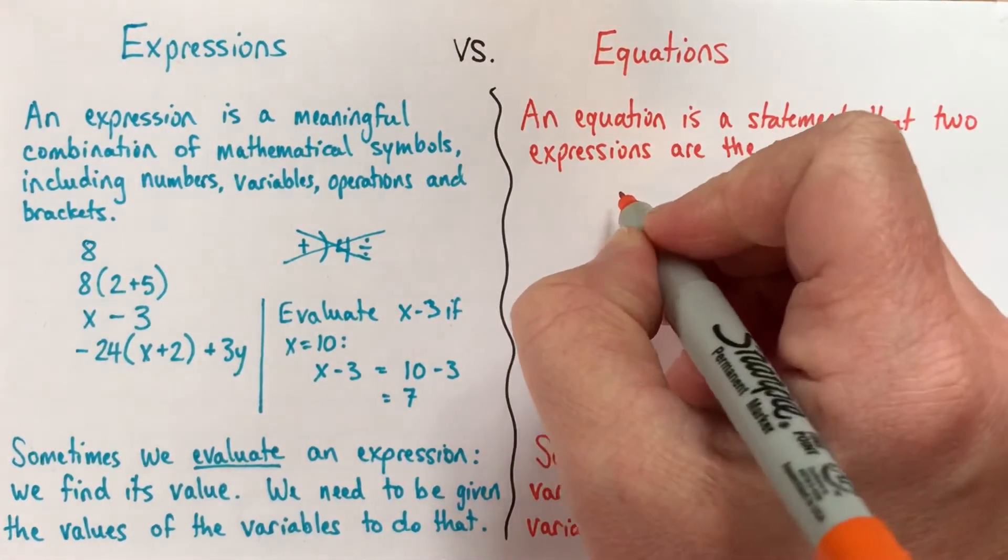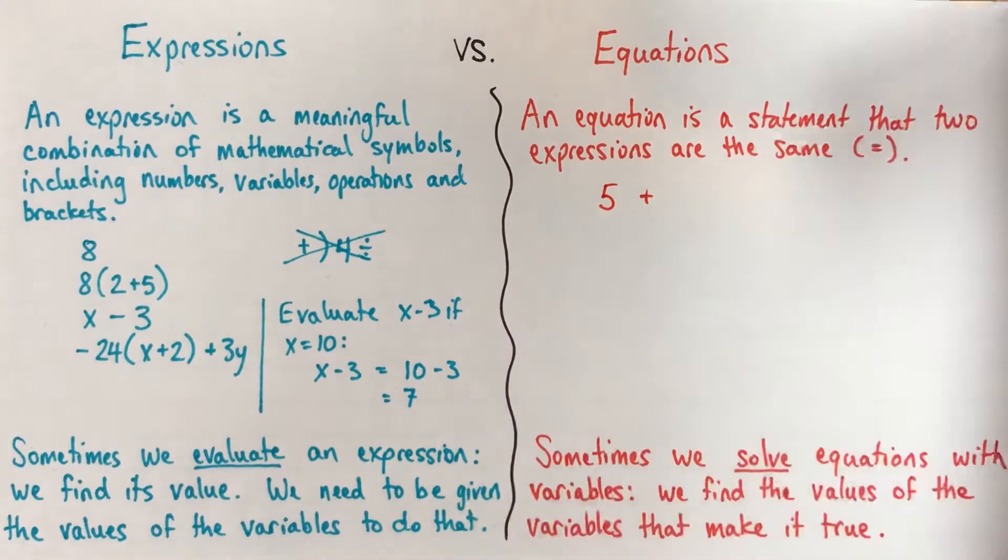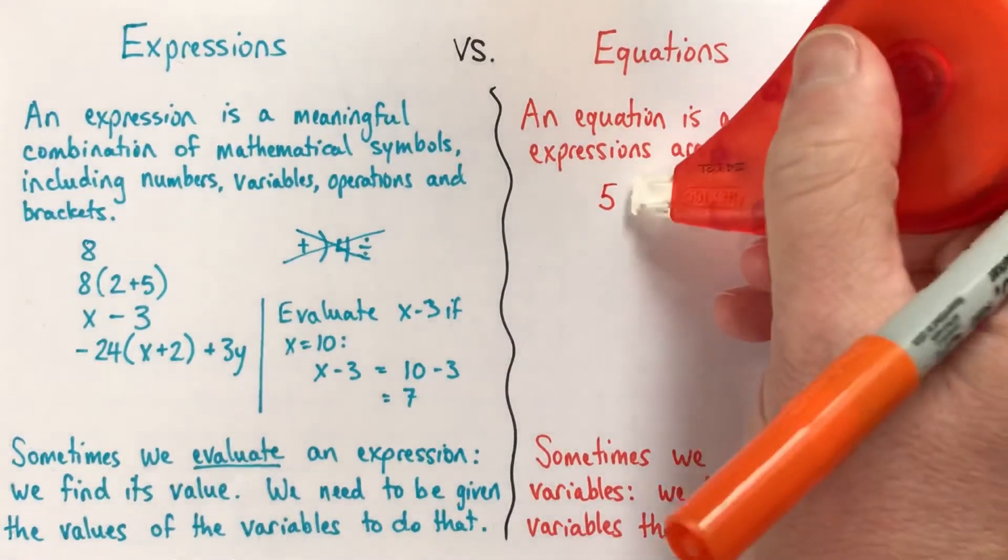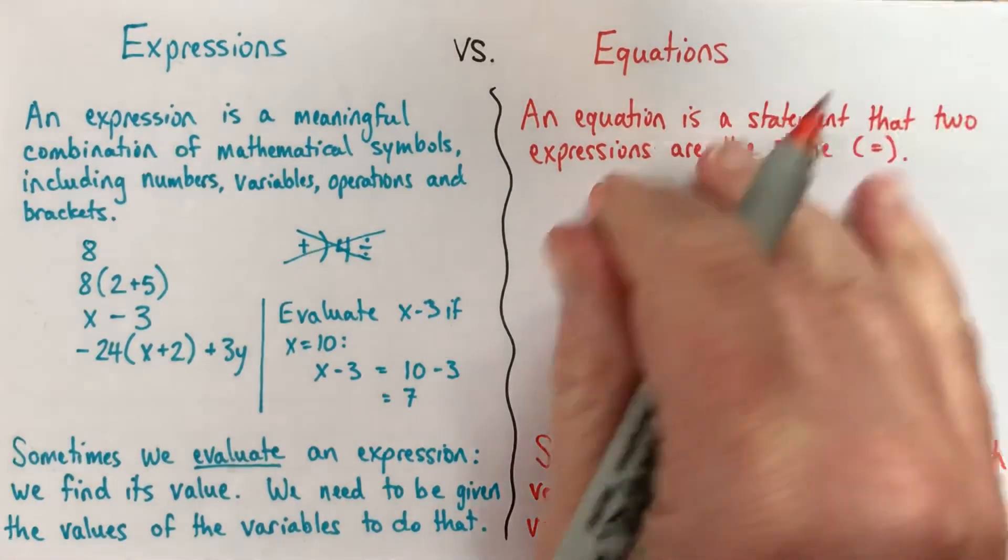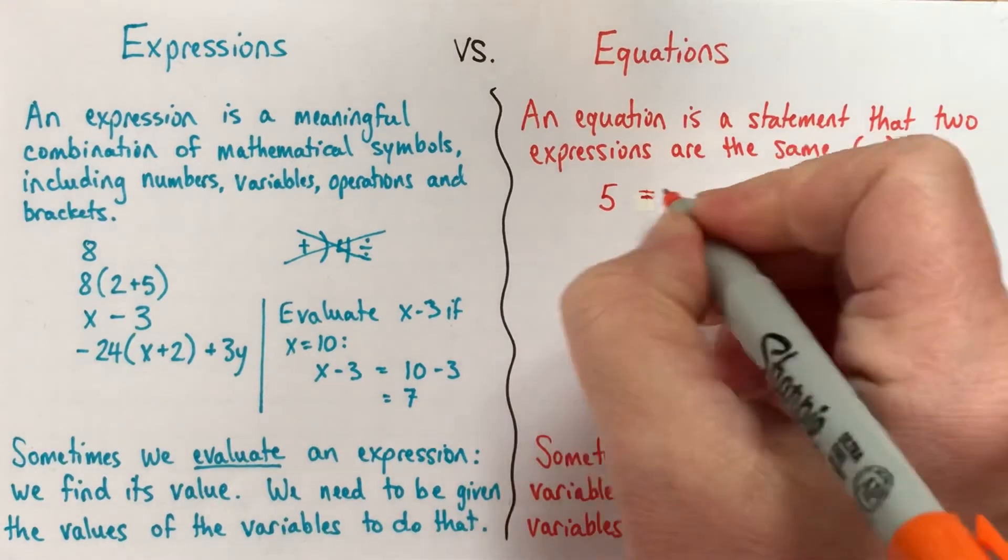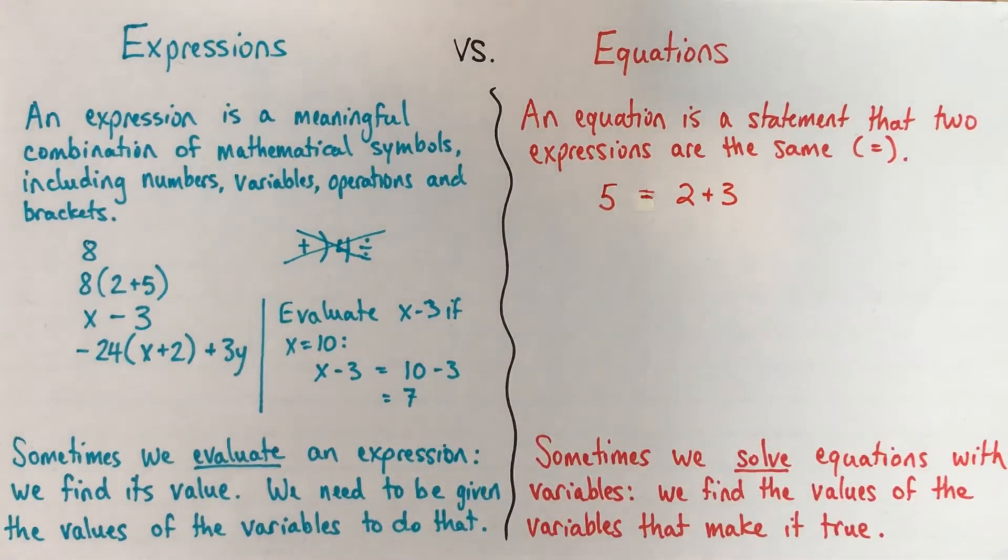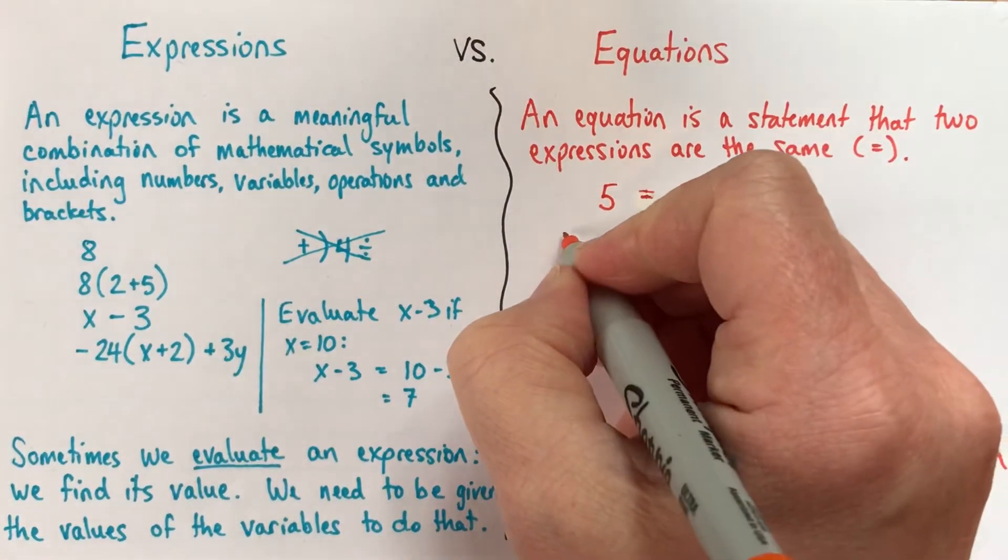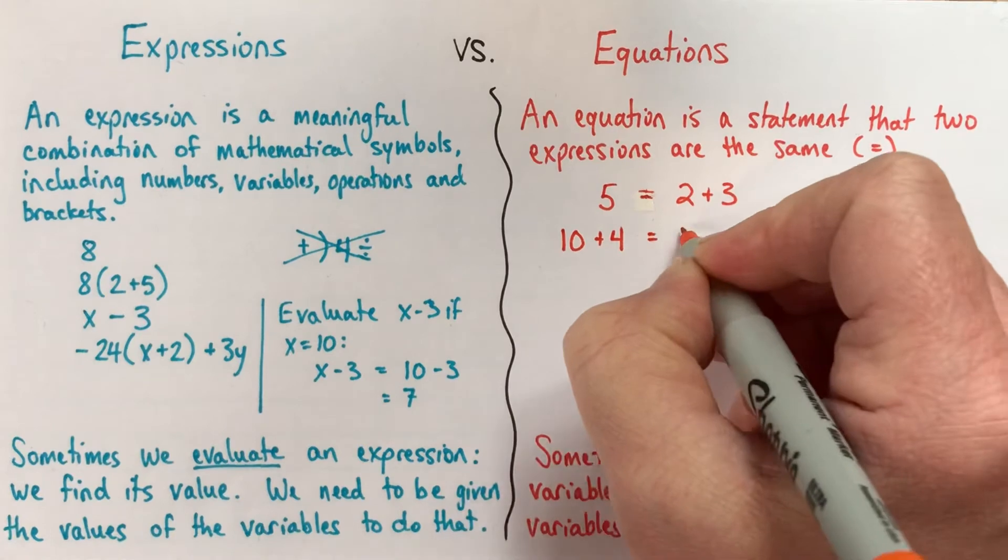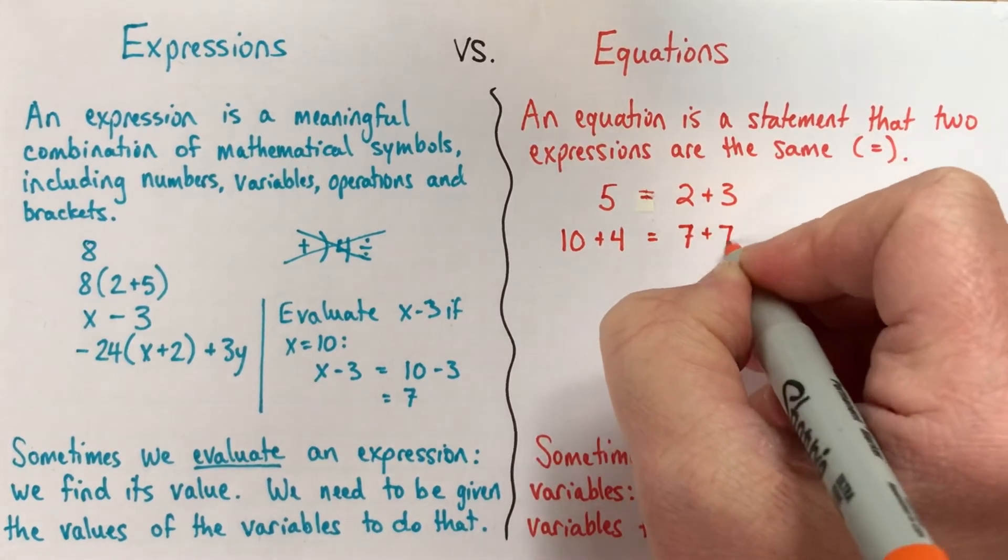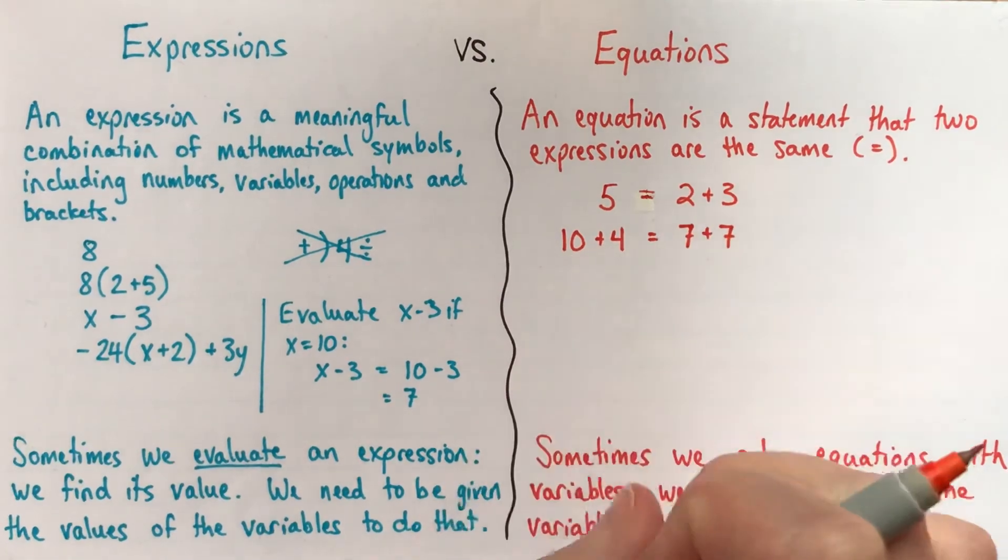So I'll do some examples. This is a nice little equation right here. 5 is equal to 2 plus 3. That's a perfectly good equation, and here's another little one with numbers. We could have 10 plus 4, that's equal to 7 plus 7, because this left side is worth 14 and the right side is worth 14 as well.